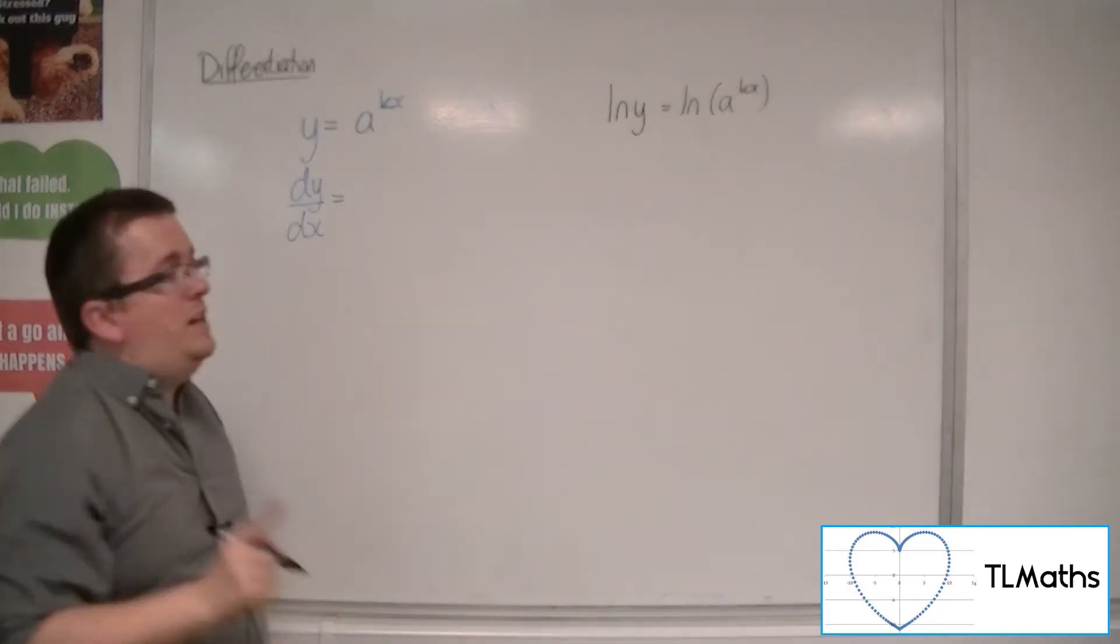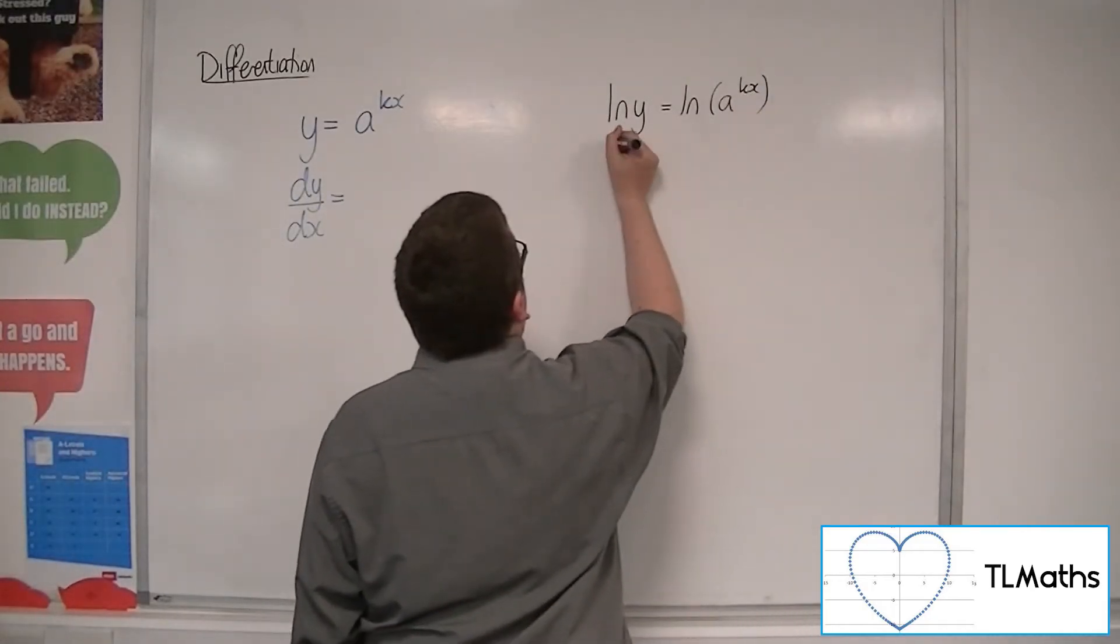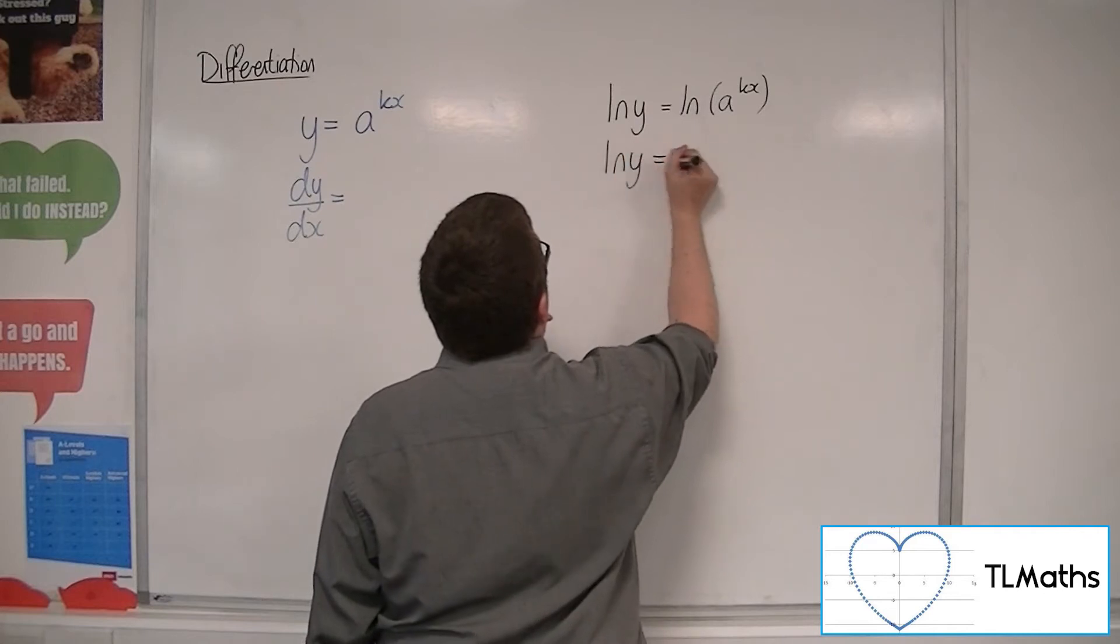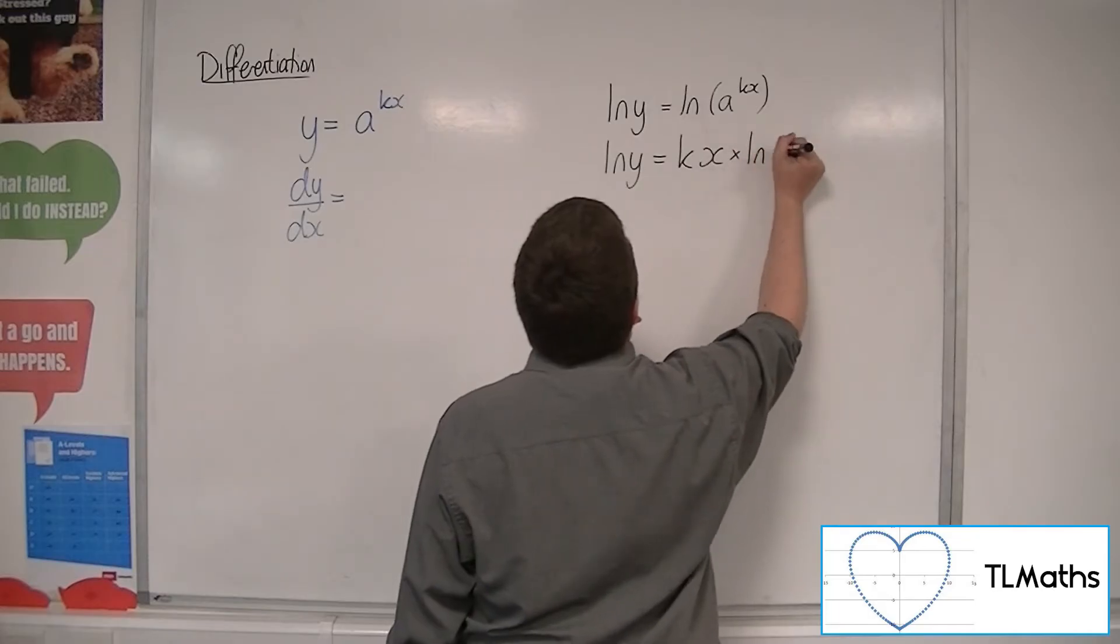Now, what we can then do is, using our log laws knowledge, bring the kx down to the front of that log. So ln of y is equal to kx times ln of a.